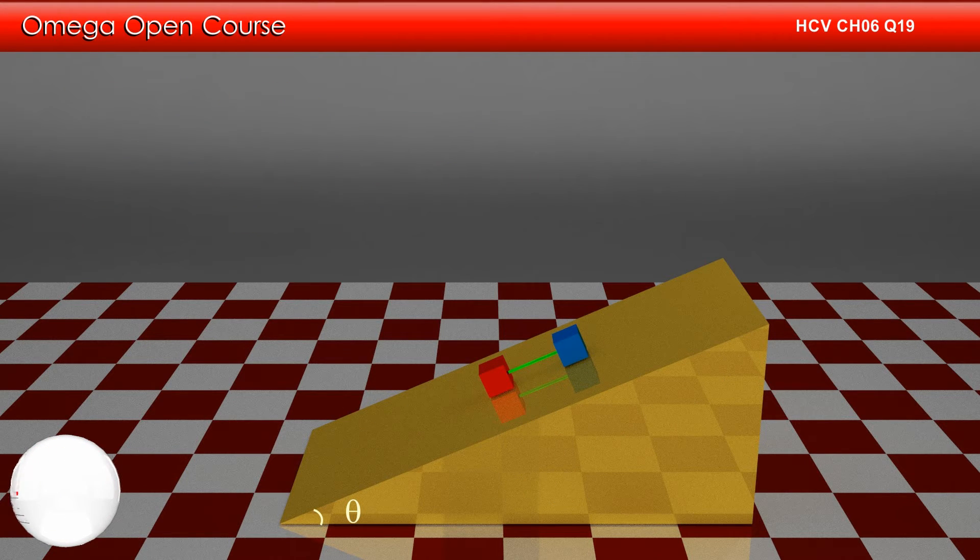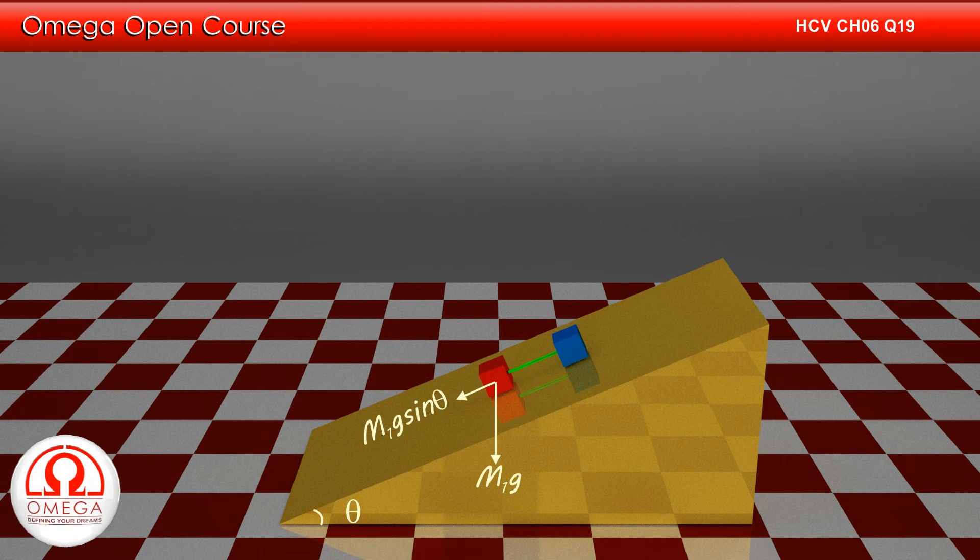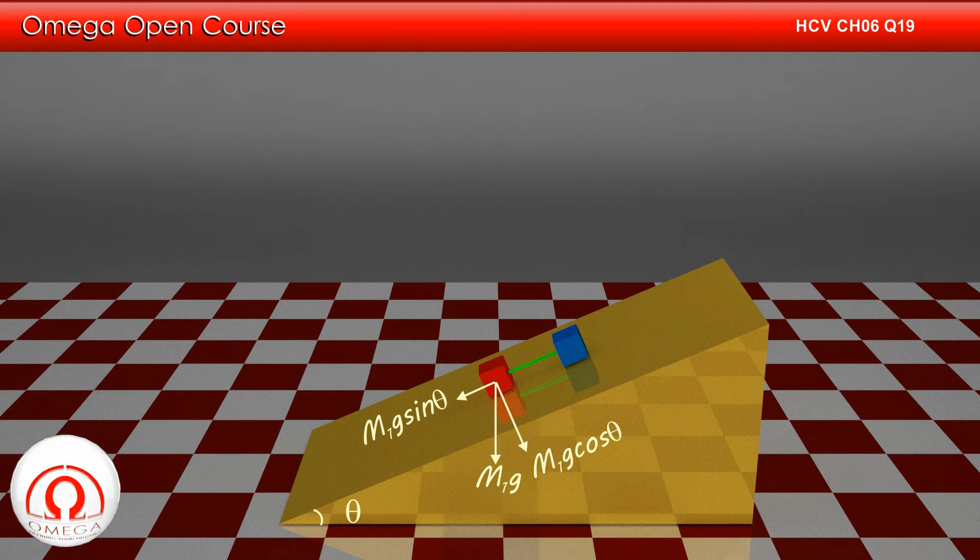Now, let us draw the free body diagram of the lower block. Gravitational force M1 g acts in vertically downward direction. The component of gravity along the incline is M1 g sin theta and perpendicular to the incline is M1 g cos theta. Normal contact force from the incline, N1, acts perpendicular to the incline.